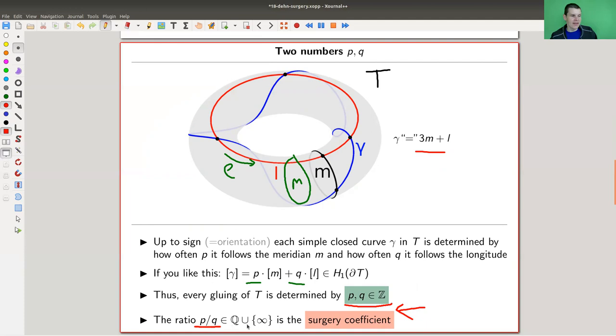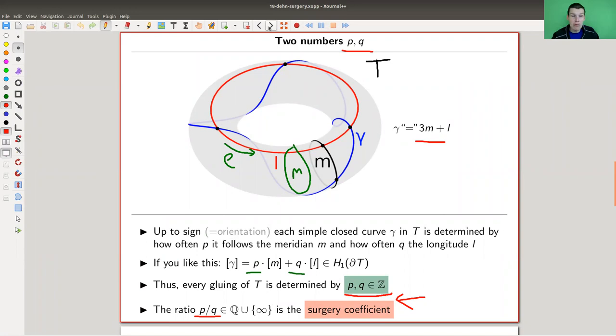And these guys are called the surgery coefficients, or to be precise, the ratio of them is called the surgery coefficient. And that's interesting. That's a very interesting idea. So you took out the knot, you glue it in again, and the gluing is described by essentially one number, namely how often you twist around the meridian and how often you twist around the longitude. And this ratio is then the crucial number, the surgery coefficient, the Dehn surgery coefficient if you want. So really just two numbers P and Q. Very simple actually. Two numbers and a knot. It turns out that this is enough.